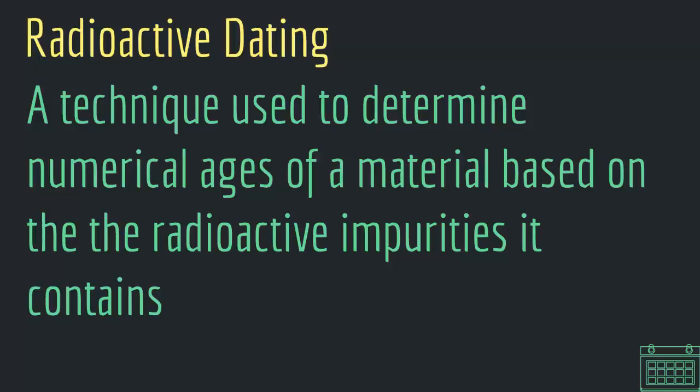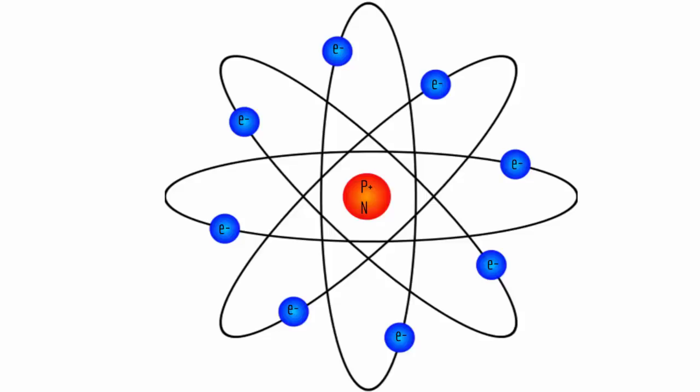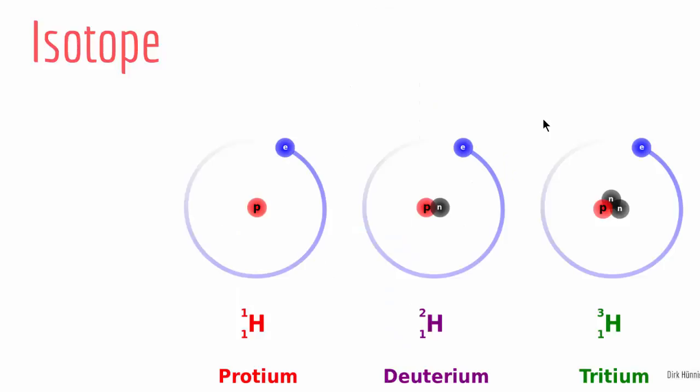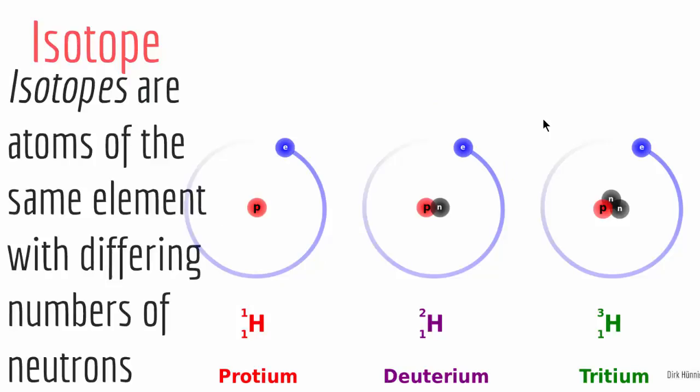So how does radioactive dating exactly work? Well, as you know, matter is composed of atoms and atoms contain protons, neutrons, and electrons. You have seen this in previous chapter. Also, what we have is isotopes. Isotopes are atoms of the same element with different numbers of neutrons.